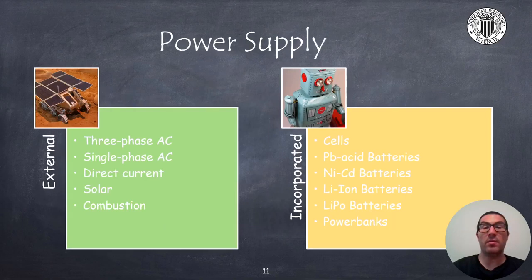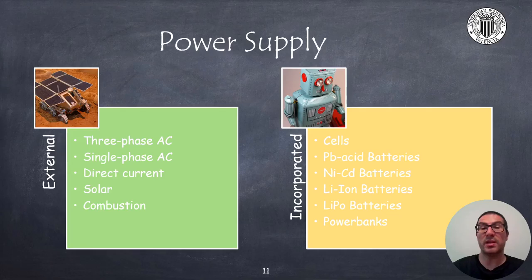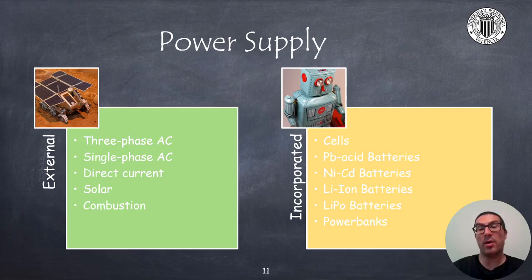The power supply of a robot can be external or internal, that is, the robot has the power supply incorporated. Depending on energy consumption needs, a robot with an external power supply can be powered with single-phase or three-phase AC current, direct current, solar, or combustion, among other power supplies. Robots with an incorporated power supply will usually work from rechargeable lithium-ion batteries, LiPo — that is, lithium-polymer batteries — lead-acid, or nickel-cadmium batteries, among others.